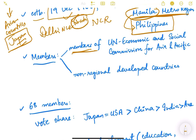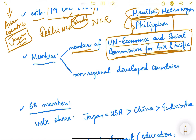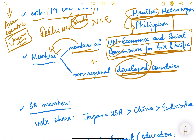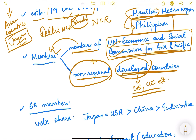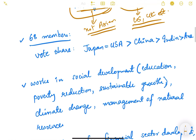The members of the Asian Development Bank are all countries that are members of the United Nations Economic and Social Commission for Asia and the Pacific (ESCAP), along with non-regional developed countries — meaning countries like the USA, UK, etc. — which are not located in Asia.